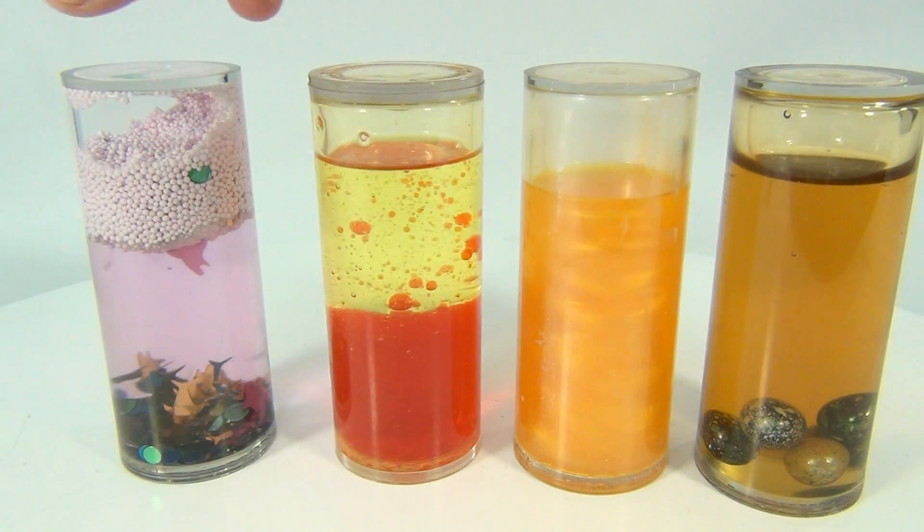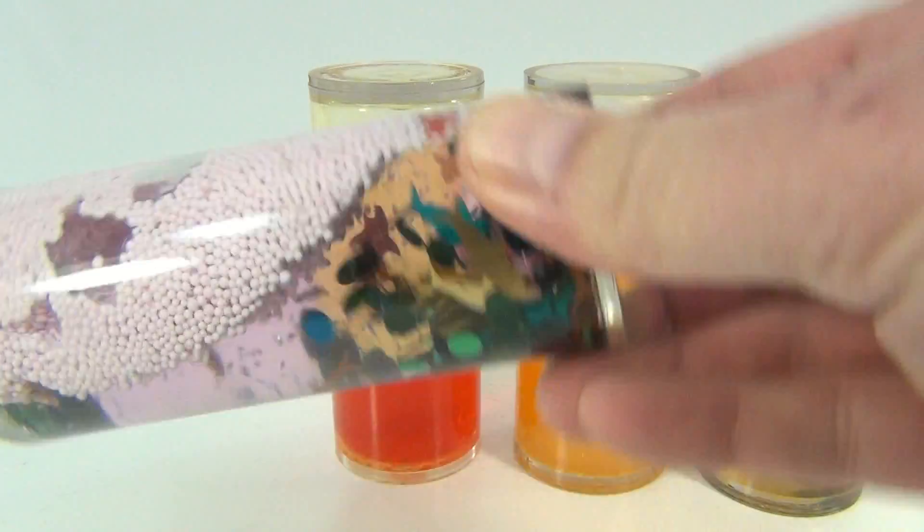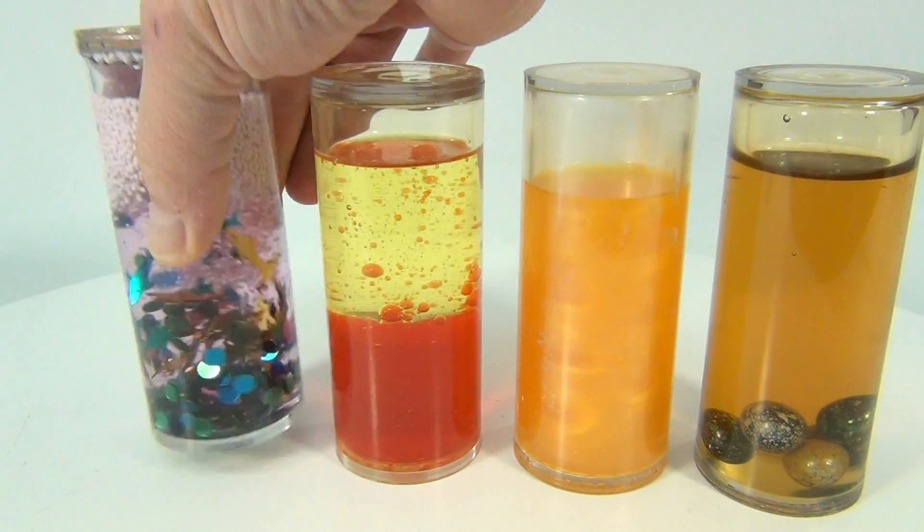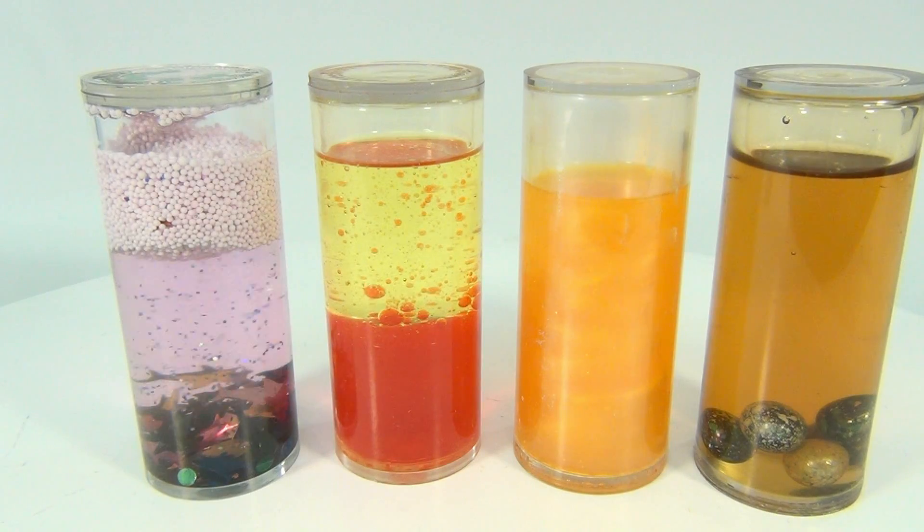And then the far one is the sink and float. So you can do a couple things with that one. You can just flip it over and watch how things spin, sink.